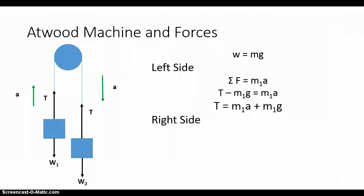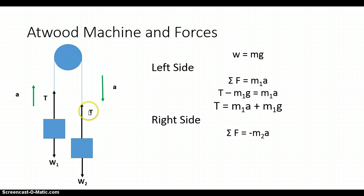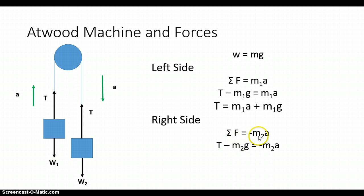On the right side of the Atwood machine, the summation of forces equals mass times acceleration, but since that mass is going in the negative direction, we have negative M2 times A. We may expand on our summation of forces by saying that negative M2A is equal to the tension — which is pulling up — minus M2G, which is pulling down. We can again solve for tension, and we get T is equal to negative M2A plus M2G.